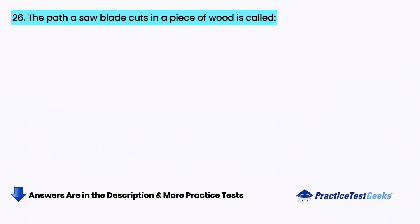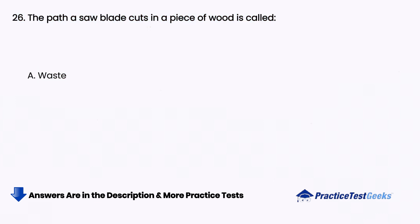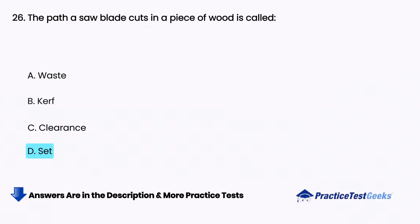The path a saw blade cuts in a piece of wood is called: A. Waste, B. Kerf, C. Clearance, D. Set.